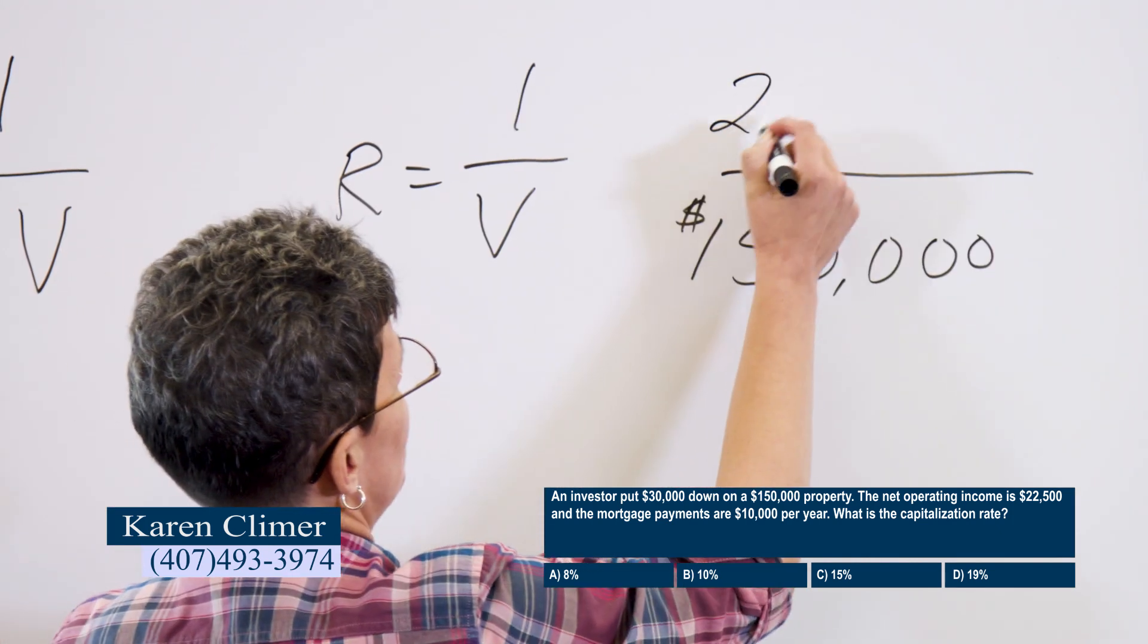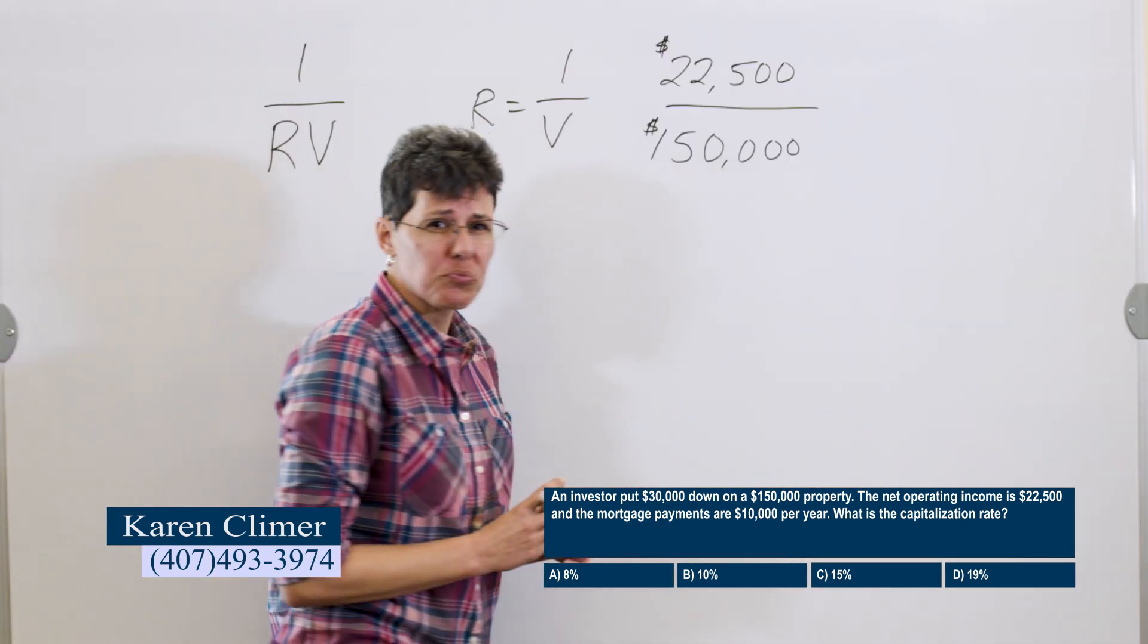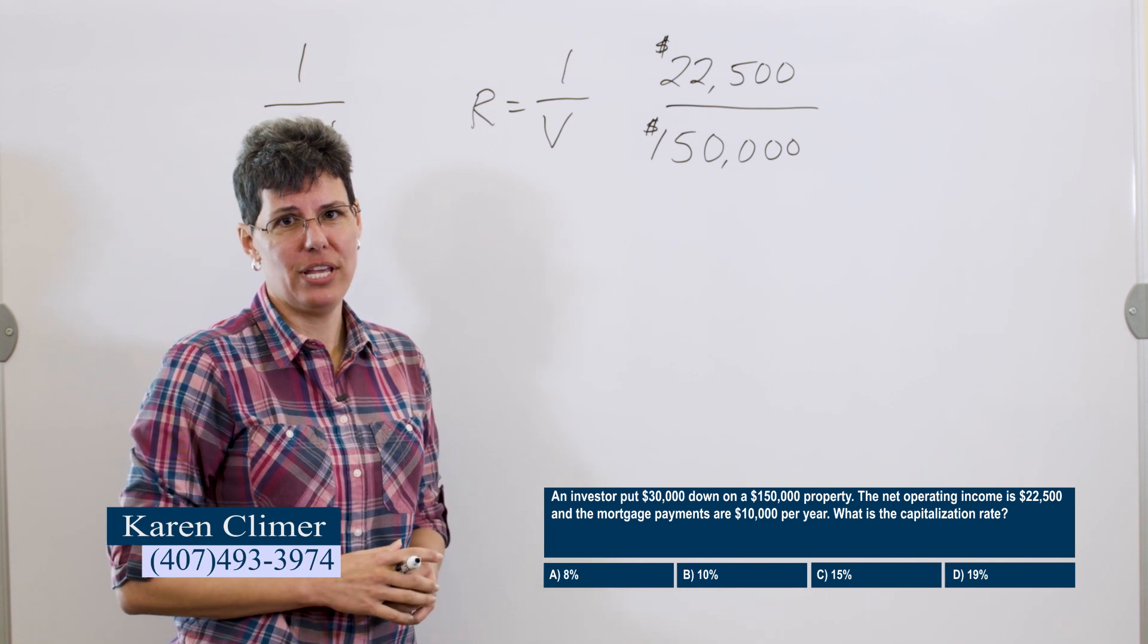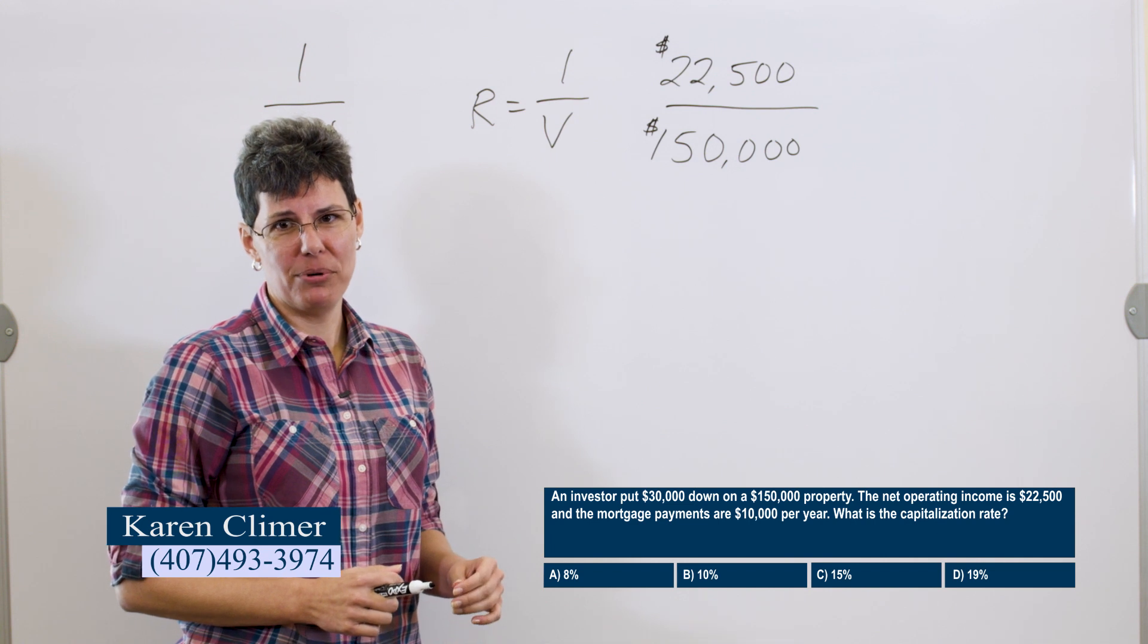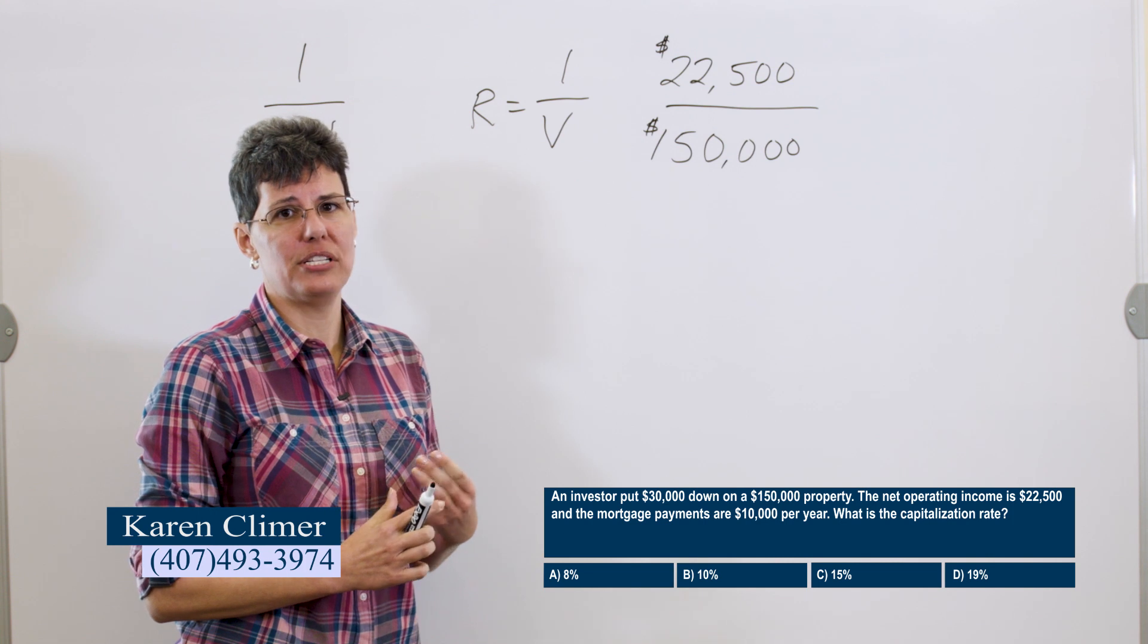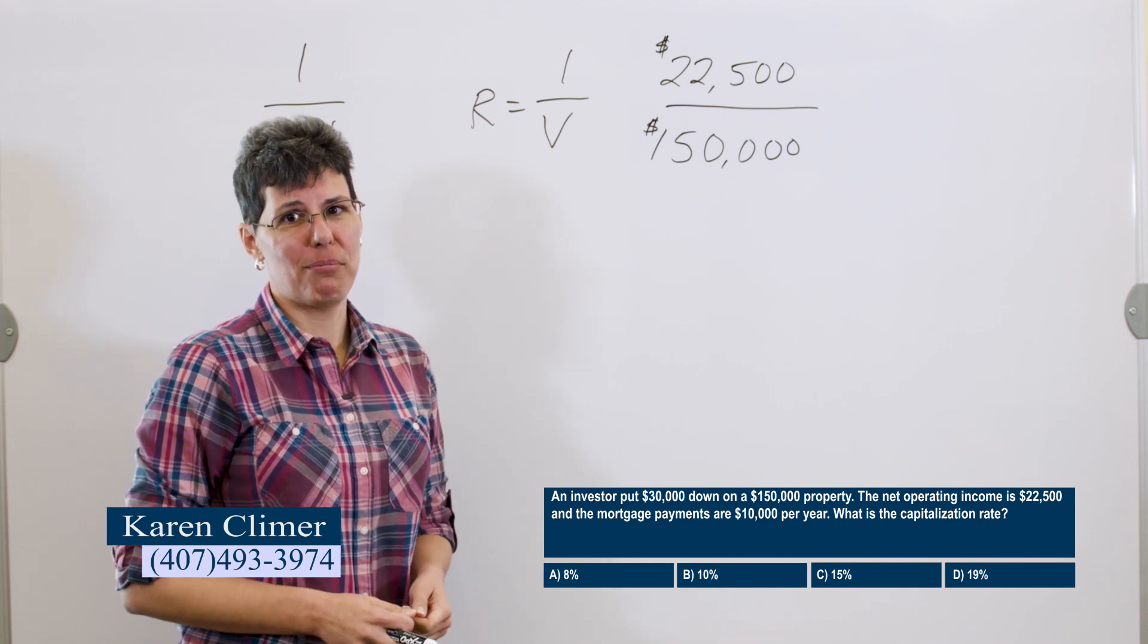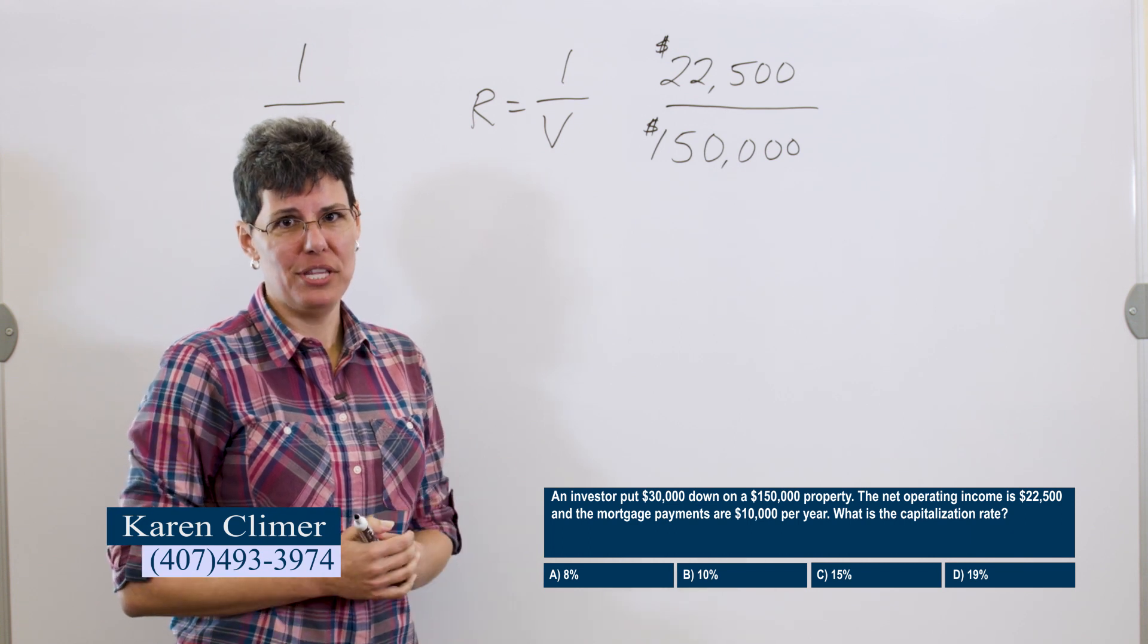It says the net operating income is $22,500. So we don't have to do any math there. It just gives us the net operating income. But it also gives us the mortgage payments are $10,000 per year. That's just problem trash. We don't need that. The mortgage is not an expense of the property. Expenses are things like utilities, insurance, salaries of the property manager. But the mortgage is not an expense of the property.